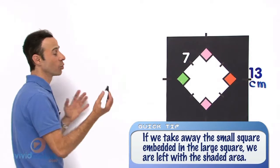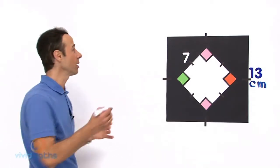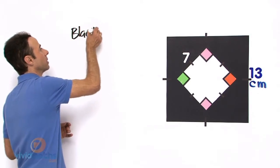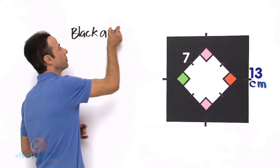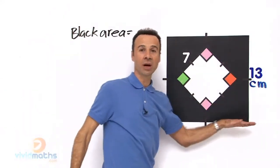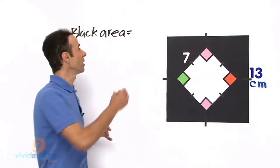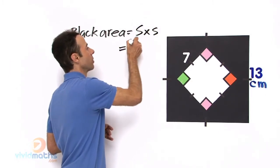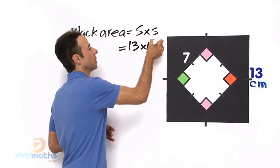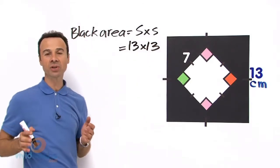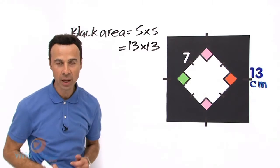So the big square, we will call that black area. Black area equals 13 times 13 - it is side times side which equals 13 times 13cm. Now on your calculator 13 times 13 is 169.